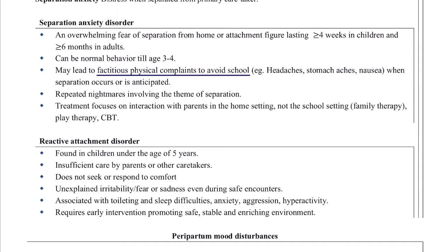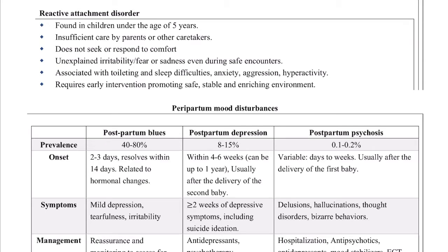Reactive attachment disorder is found in children under age five when parents or caretakers do not care for the child. These children will not seek or respond to comfort — this is a brain development disorder and unless you intervene early, it will be considered normal by the child. Symptoms include unexplained irritability or fear, anger outbursts, toileting problems, sleep difficulties, anxiety, aggression, and hyperactivity. Early intervention is essential to prevent permanent brain development effects.